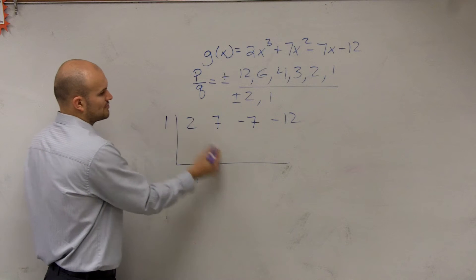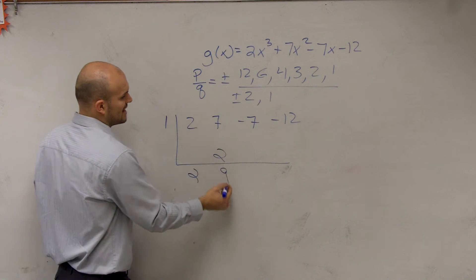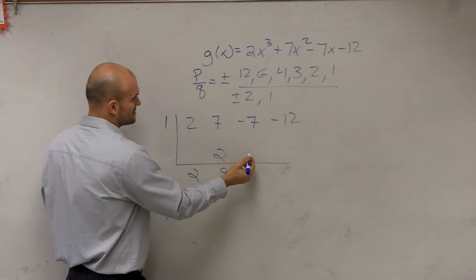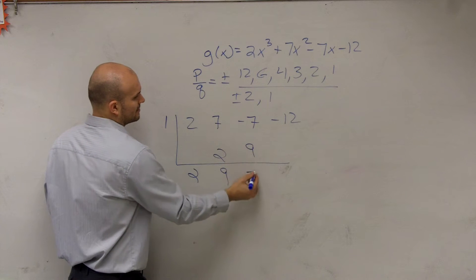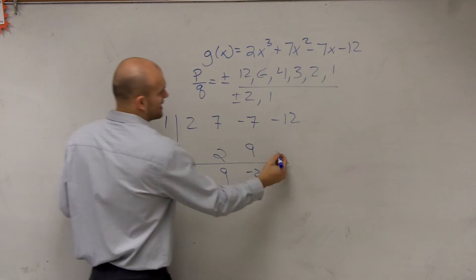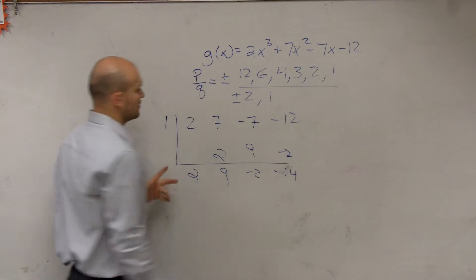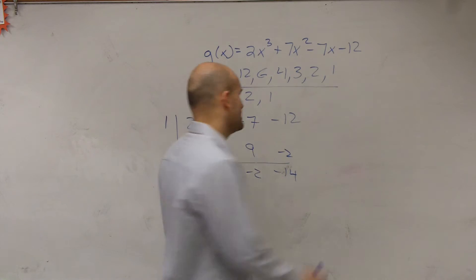Bring down the 2. 2 times 1 is 2. 7 plus 2 is 9. 9 times 1 is 9, negative 2. Negative 2 times 1 is negative 2. Therefore, is 1 a zero? No. So let's try negative 1.